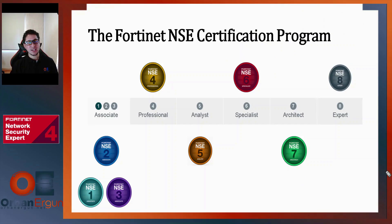Fortinet has a certification program consisting of eight levels, starting at Associate and ending at Expert. Each of these levels has a specific focus. Levels 1, 2, and 3 correspond to the entry levels, in which you know the brand and its products from a rather commercial point of view, going through some basic technical aspects as well. The first Network Security Associate certification teaches you about the threat landscape, providing a basic understanding of the ever-increasing threat landscape that impacts networks today.